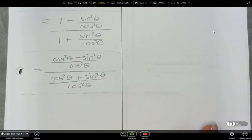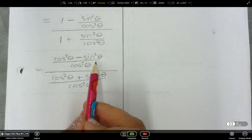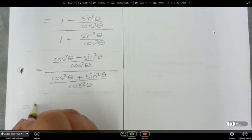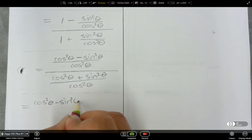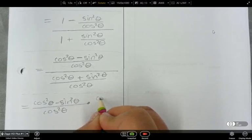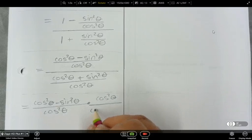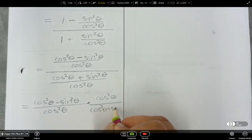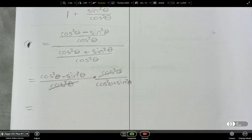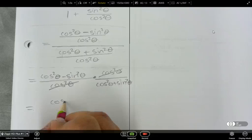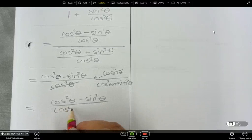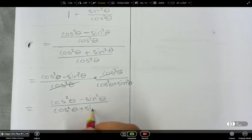So what happens here now? Notice how I've got this fraction. I've got that fraction. There's a divide in the middle. So I can multiply by the reciprocal. And what happens to the cos squared thetas? These reduce out. And then what are we left with? We are left with cos squared theta minus sine squared theta over cos squared theta plus sine squared theta.